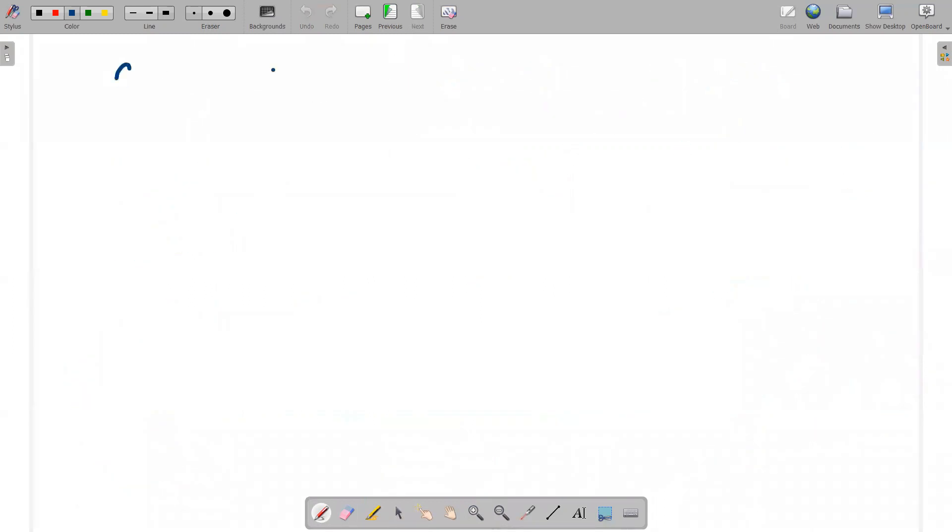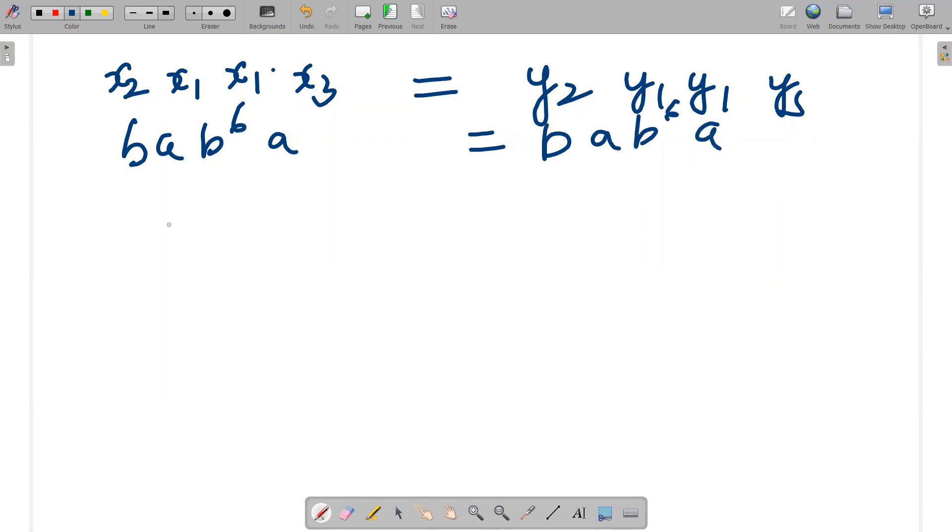We have got x2, x1, x1, x3: bab⁶a equal to y2, y1, y1, y3: bab⁶a. So this problem does have a solution, and the solution is if I take a pattern of 2-1-1-3, this can give me an answer.